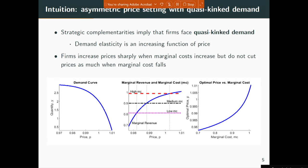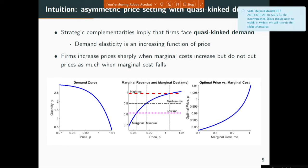Take the Smets-Wouters model and strip away price rigidity, wage rigidity, and capital — just the static monopoly price-setting problem at the core. With the Kimball aggregator, you get strategic complementarities: the demand elasticity for intermediate goods like tomatoes, lettuce, beef, beer, and wine is an increasing function of a firm's price. If a firm increases its price, the demand elasticity increases — more and more customers leave the store. A firm increasing its price will lose proportionally more customers as it keeps increasing, compared to the Dixit-Stiglitz case.